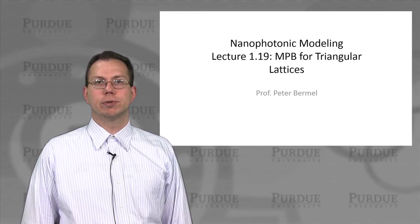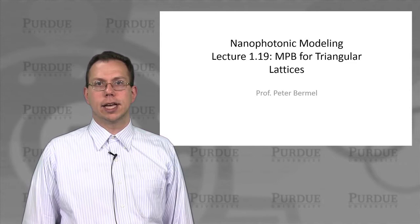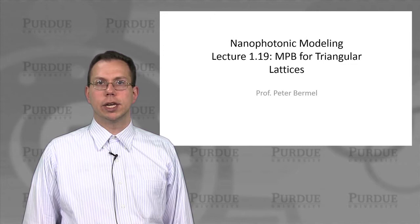We had said that triangular lattice is actually fairly similar to the square lattice except for a couple of changes. We created a non-Cartesian basis, and we picked different K points. So those are the most important differences.